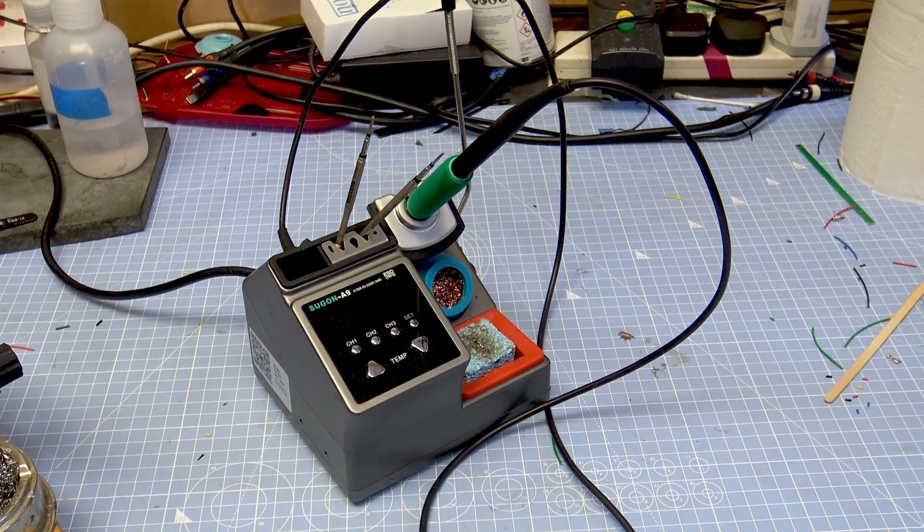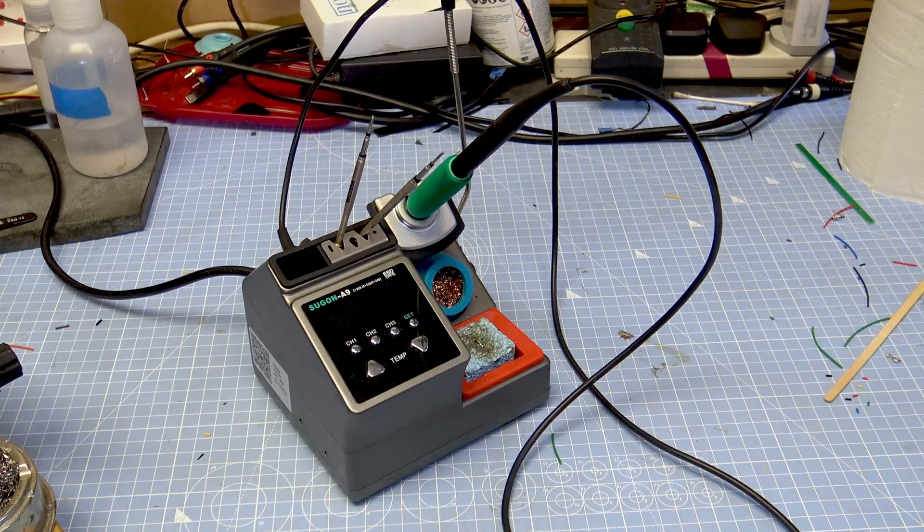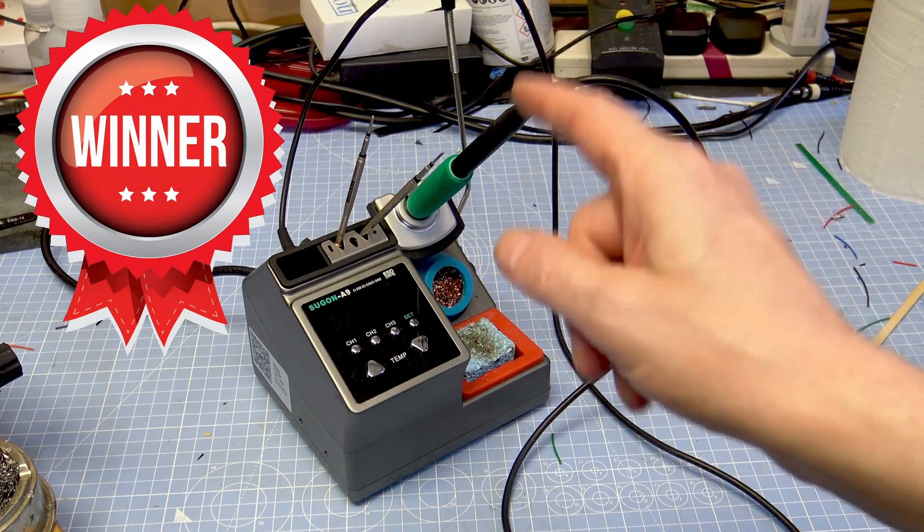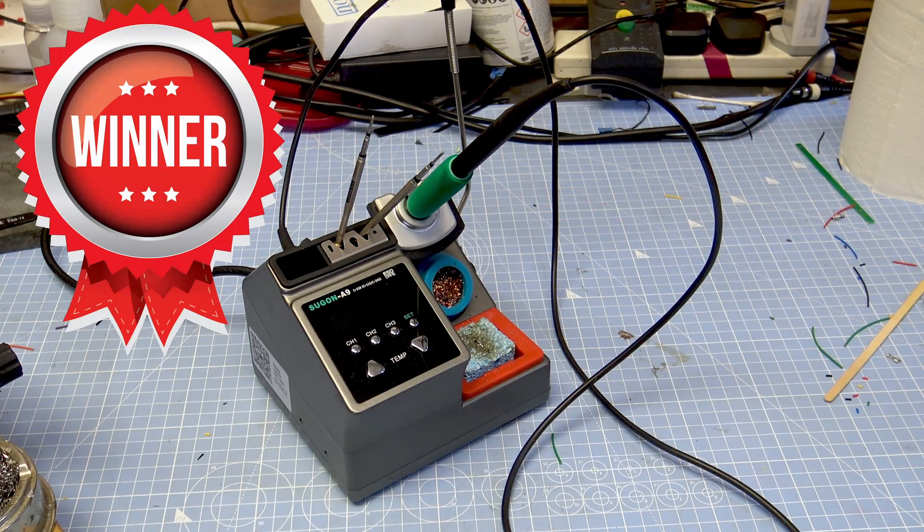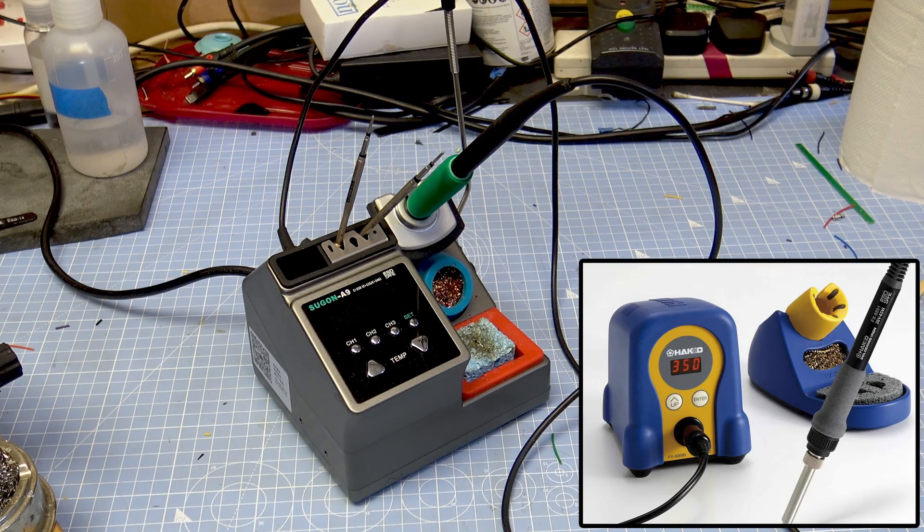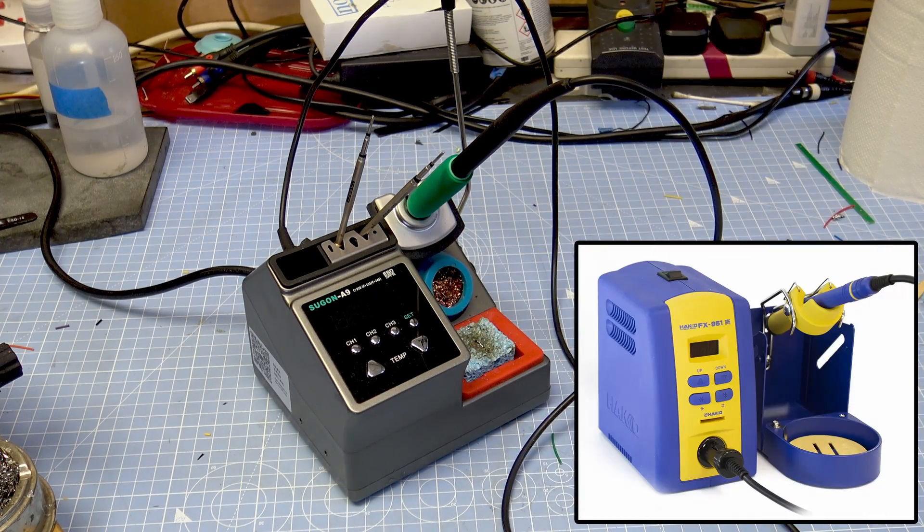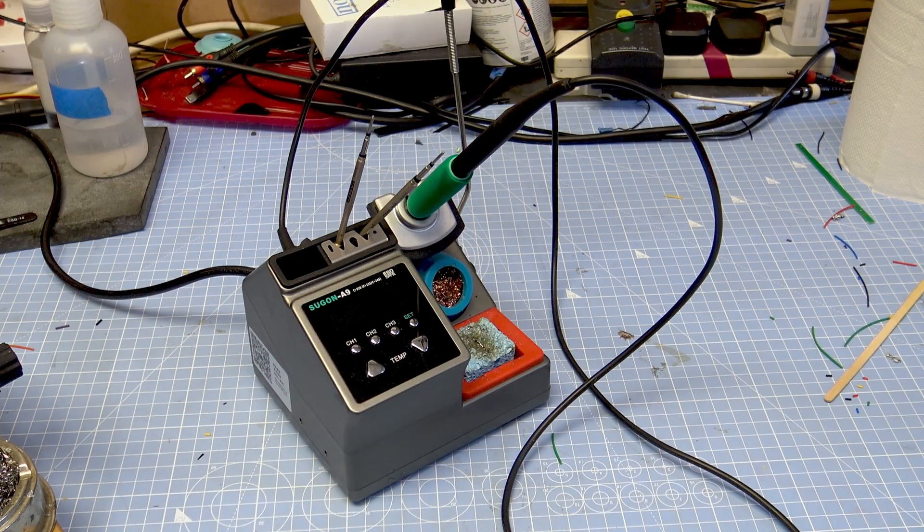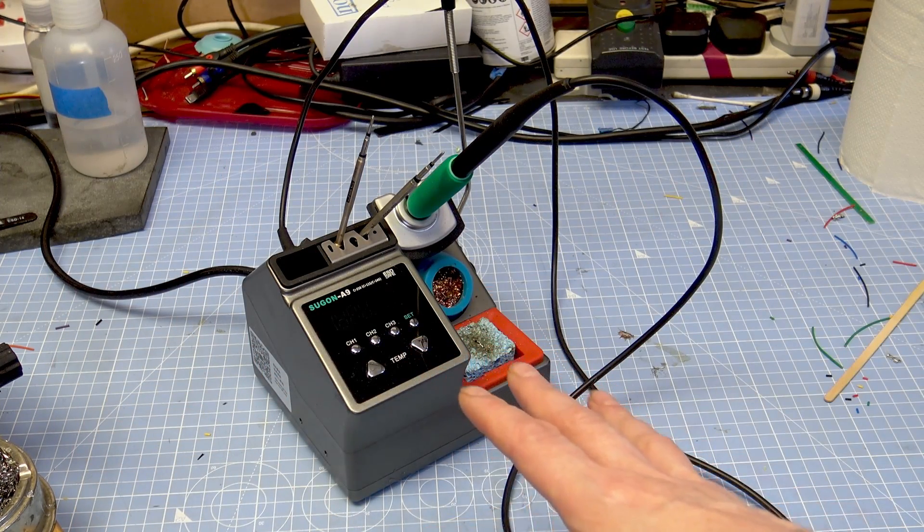So would I recommend this? I would definitely recommend this. You're looking at about 100 pounds, but it's fantastic. Just having access to all of the JBC tips gives this a massive win in my opinion. A lot of people are always going on about the Hakko, but this is comparable to the higher-end Hakko, not the one that everybody uses. I had one of those and I sold it when I got the TS100. So far this has been reliable. It hasn't let me down.